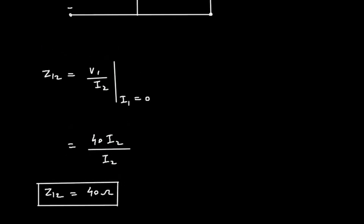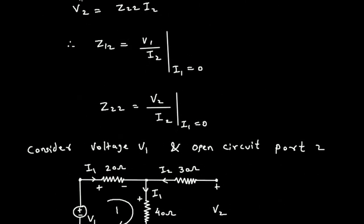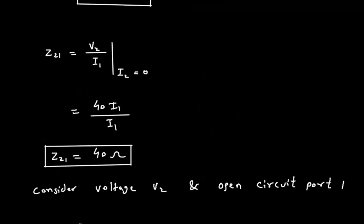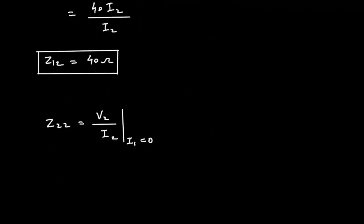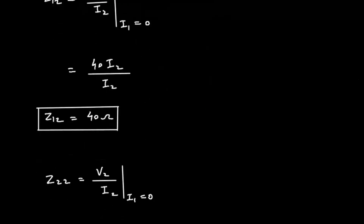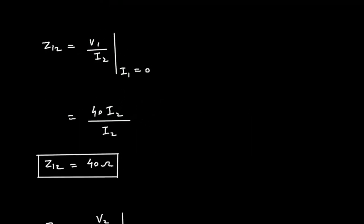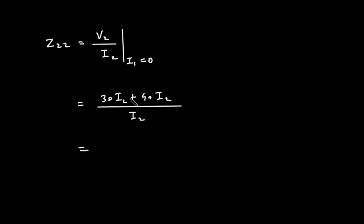Next and last, from this condition when port 1 is open-circuit, we can also find Z22. Z22 is equal to V2 by I2. Here in this circuit, V2 is equal to 30·I2 plus 40·I2. So V2 equals 70·I2, and dividing by I2, Z22 is equal to 70 ohm.